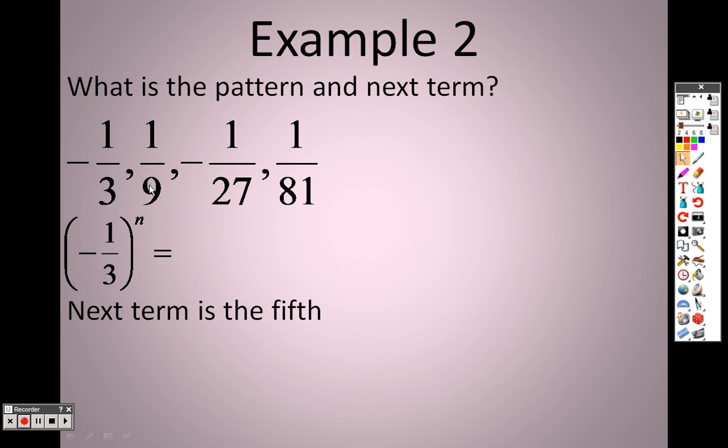Negative times a negative is a positive. 3 times 3 is 9 on the bottom. When we get to this eventually, which will be in 11.3 when we're talking about geometric sequences and series, you might be able to get a better gist on this. When we get to that section, I'll talk about it in more detail. But right now, if it says find the fifth term, all you need to do is plug a 5 in there. Negative 1 over 3 to the 5th is negative 1 over 243.